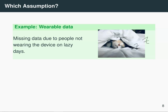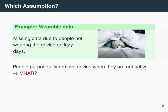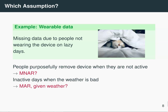What about the second example with the lazy days? That means people are taking off their device and creating missingness on days where they are physically less active, so the missingness depends on the data that's actually not there. So it seems like missing not at random is the best assumption. However, it might be that people choose to have these lazy days when the weather is bad — so if weather data is observed and missingness only depends on the weather, you could assume that the data is missing at random given the weather.